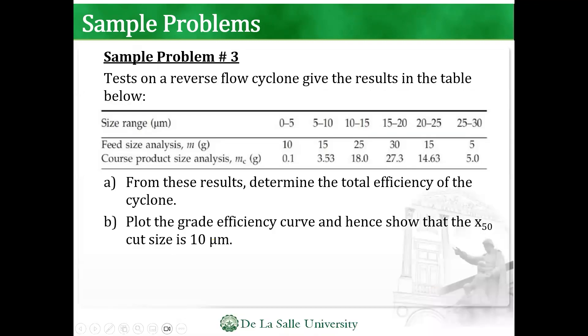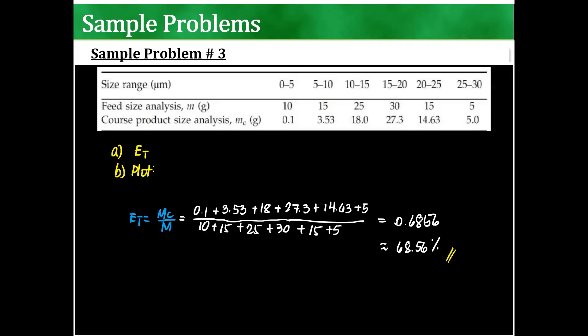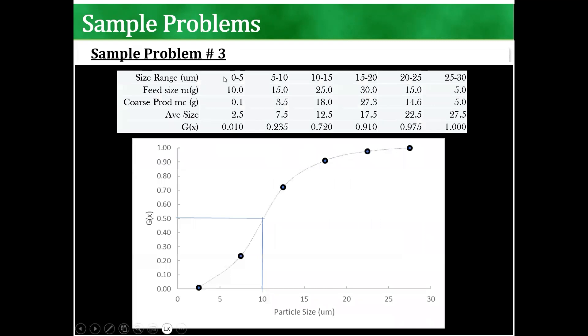Letter B, plot the grade efficiency curve and hence show that X50 cut size is 10 microns. So what I did here was this is basically the same as the given. And then the average size, I just get the average of this one. 0 to 5 is 2.5, 5 to 10 is 7.5, and so on. And then the grade efficiency, it's basically the coarse divided by the feed.